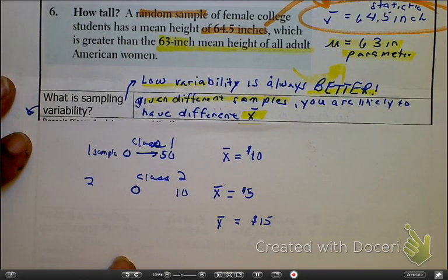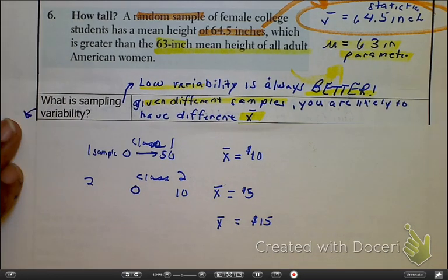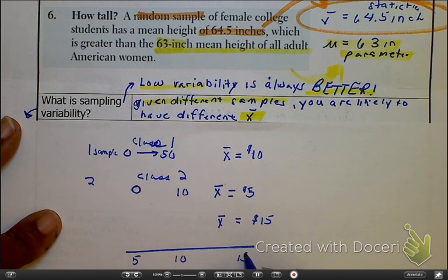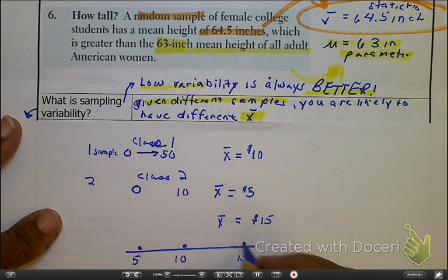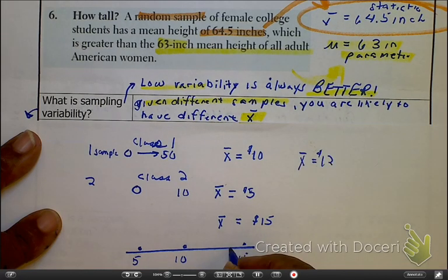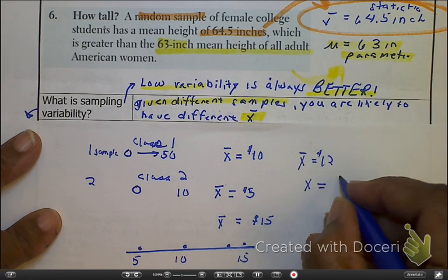It's not of individuals. It is taking the average of the group and then showing what it looks like on — why not a dot plot? So here's 5, here's 10, here's 15. Here's one class, here's another class, here's a third class — their average money in their pocket. Here's another class, and their average in their pocket.